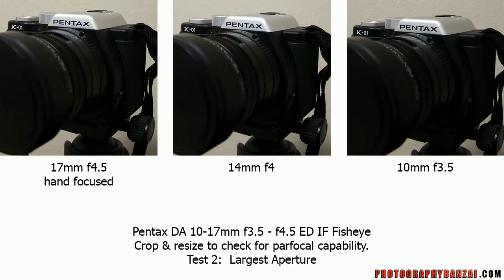Second test with that same lens. However, this time I changed the aperture to use the maximum possible for that focal length: 17 millimeter is f4.5, 14 is f4, and 10 millimeter is f3.5. You can also see the same case with that SMC Pentax FA text on the lens barrel — 10 millimeter is sharper. It fits the same result as the fixed aperture test. I wouldn't say it's necessarily a focus shift; it could be depth of field differences, but it's worth looking into.